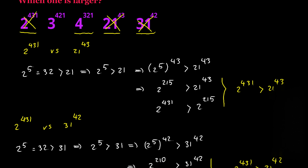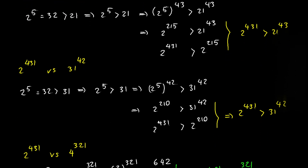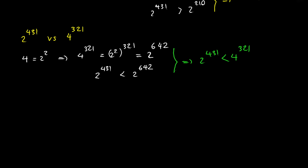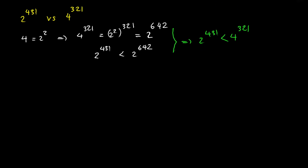So in order to find out which one is the largest number, we just need to compare the second number with the third number. I want to compare 3 to the power of 421 with 4 to the power of 321.